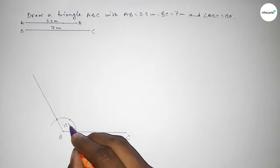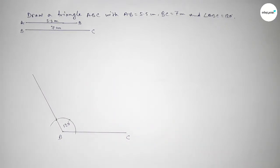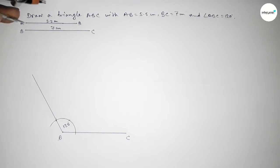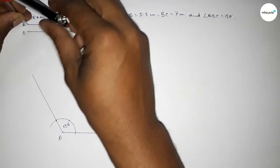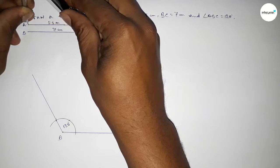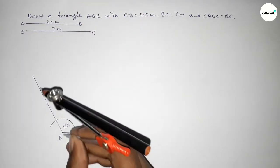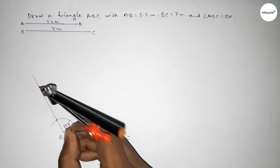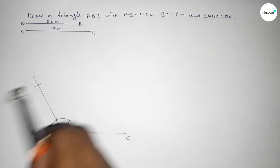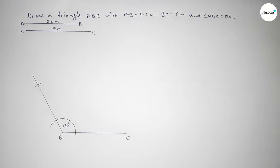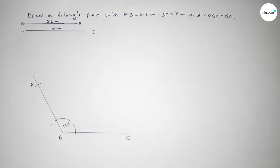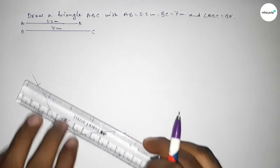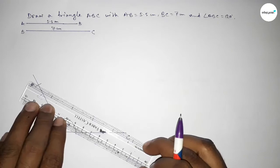Next, taking the length AB equal to 5.5 centimeter using the compass, place the compass at B and cut along the 120 degree ray to mark point A.